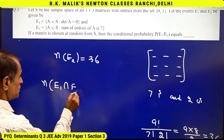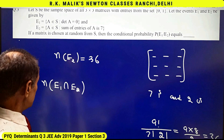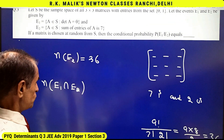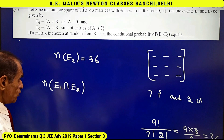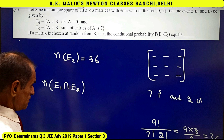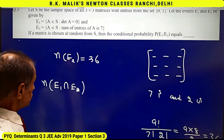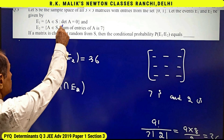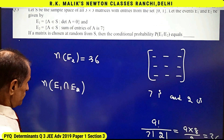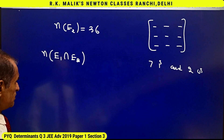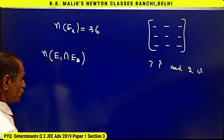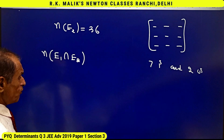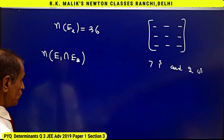Now I find the number of elements in E1 ∩ E2. Matrices in E1 ∩ E2 must have seven 1s and two 0s (from E2) and also have determinant equal to zero (from E1). It is not difficult to see that if the two zeros are in the same row or the same column, the determinant is sure to be zero.